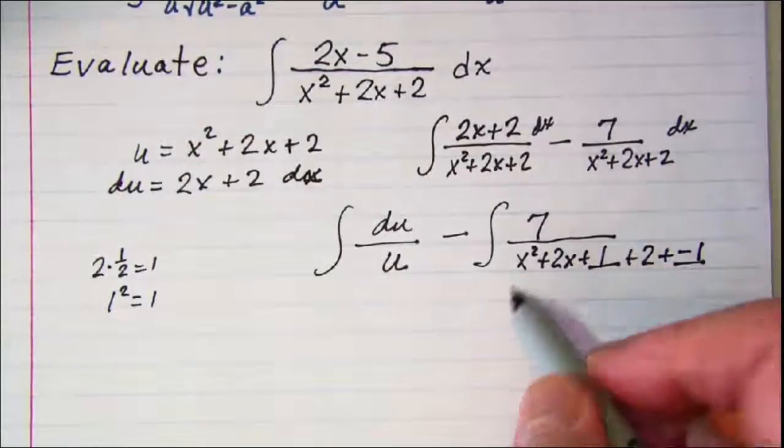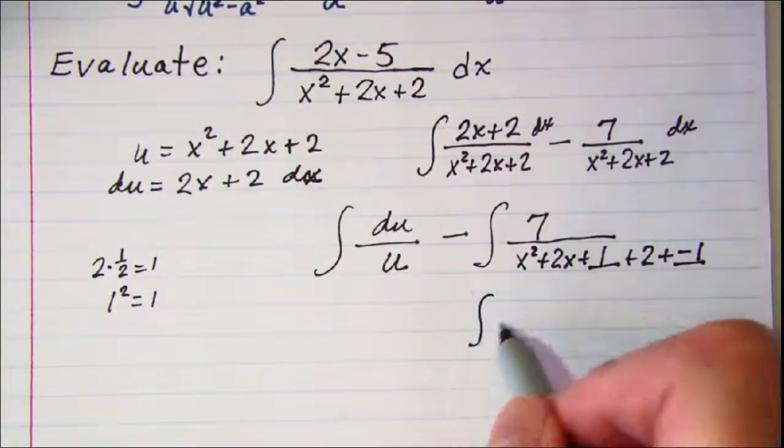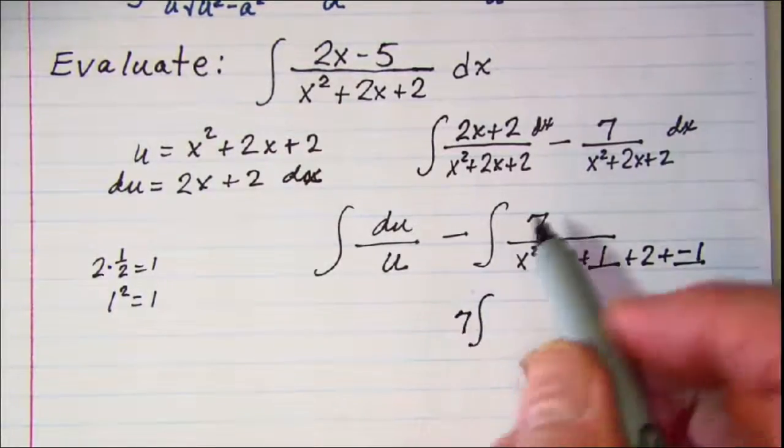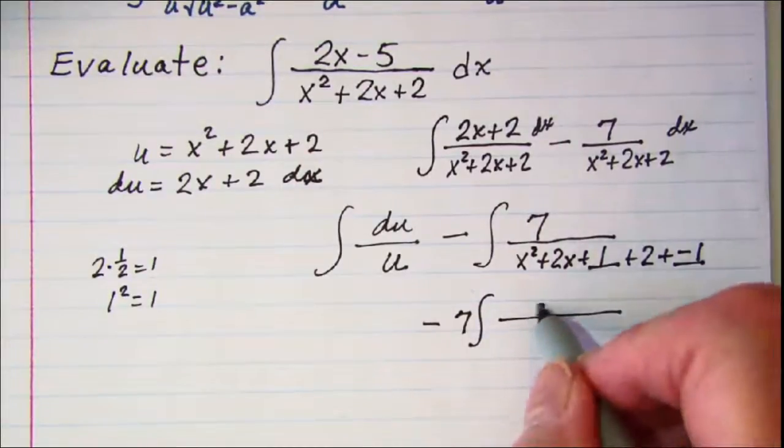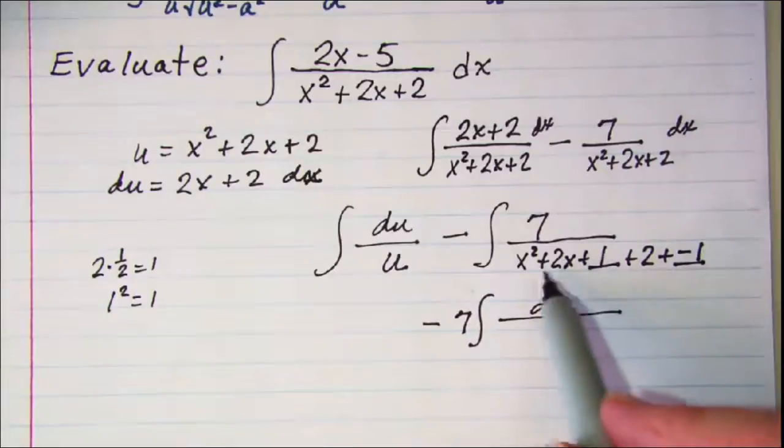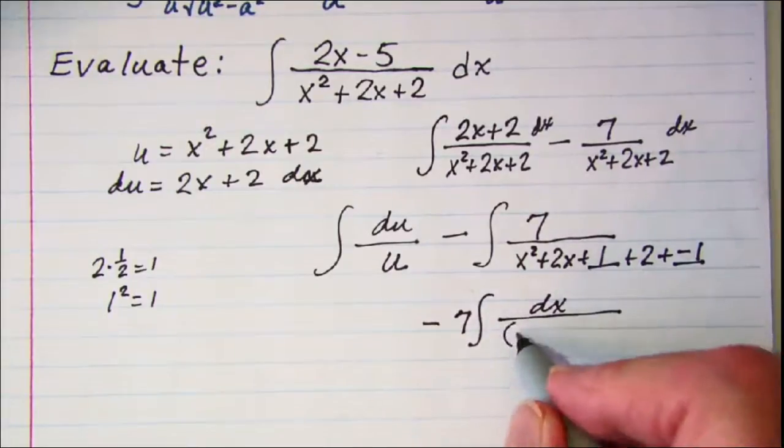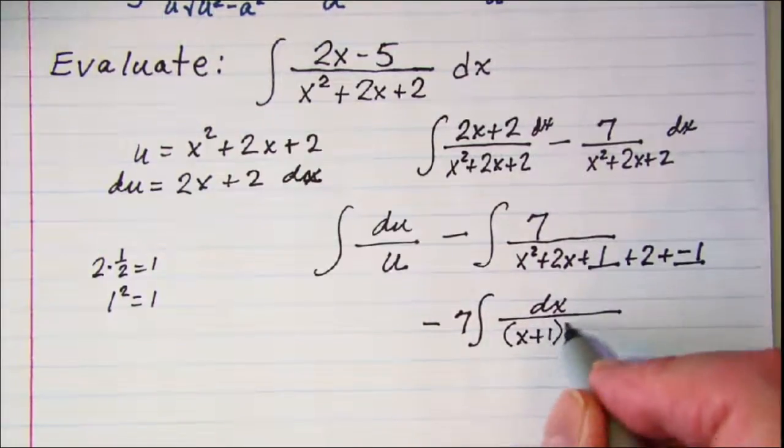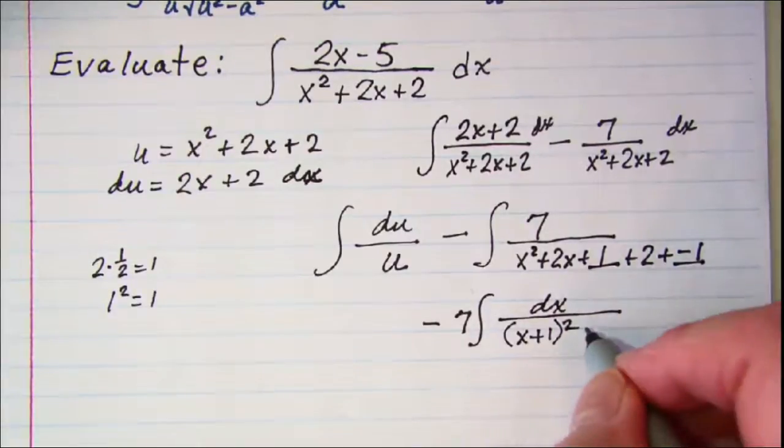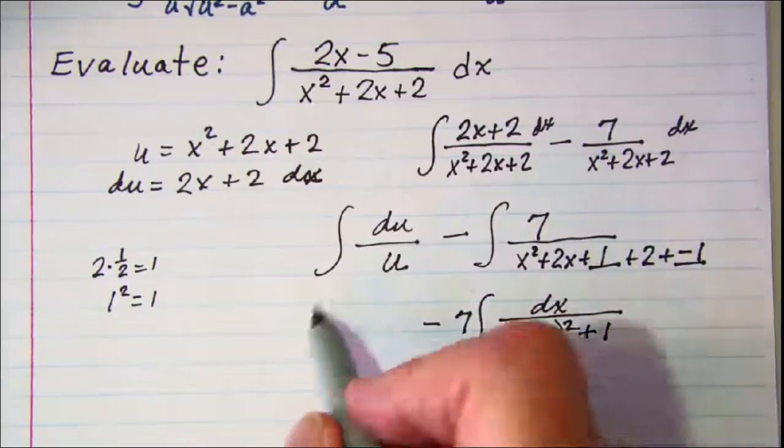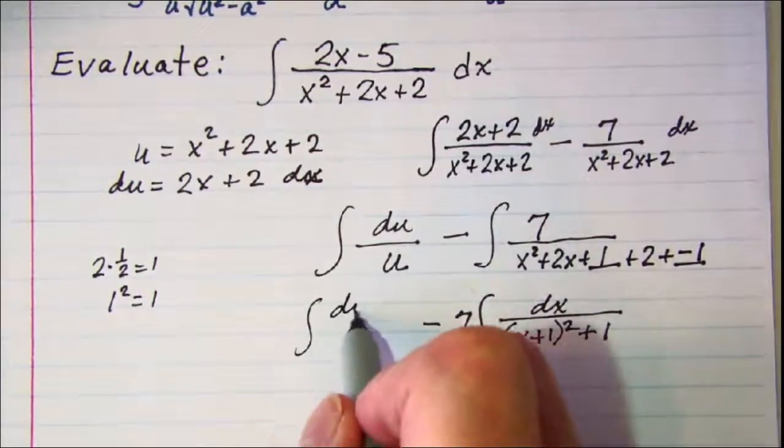So now this second part is and I'll go ahead and bring my 7 out. This is x plus 1 quantity squared and then 2 plus negative 1 is 1. I'll copy this because it looks lopsided.